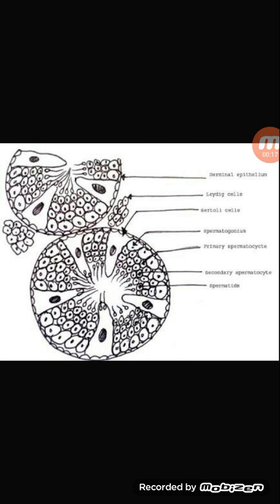Externally, the testes is covered by a fibrous connective tissue called tunica albuginea. The middle layer is called tunica vascularis, which is formed of capillaries, that is blood vessels. The innermost layer, going from inside to outside, is an incomplete layer that comes from the peritoneum — for how it comes from the peritoneum, refer to the descent of testes. This innermost layer is called tunica vaginalis.